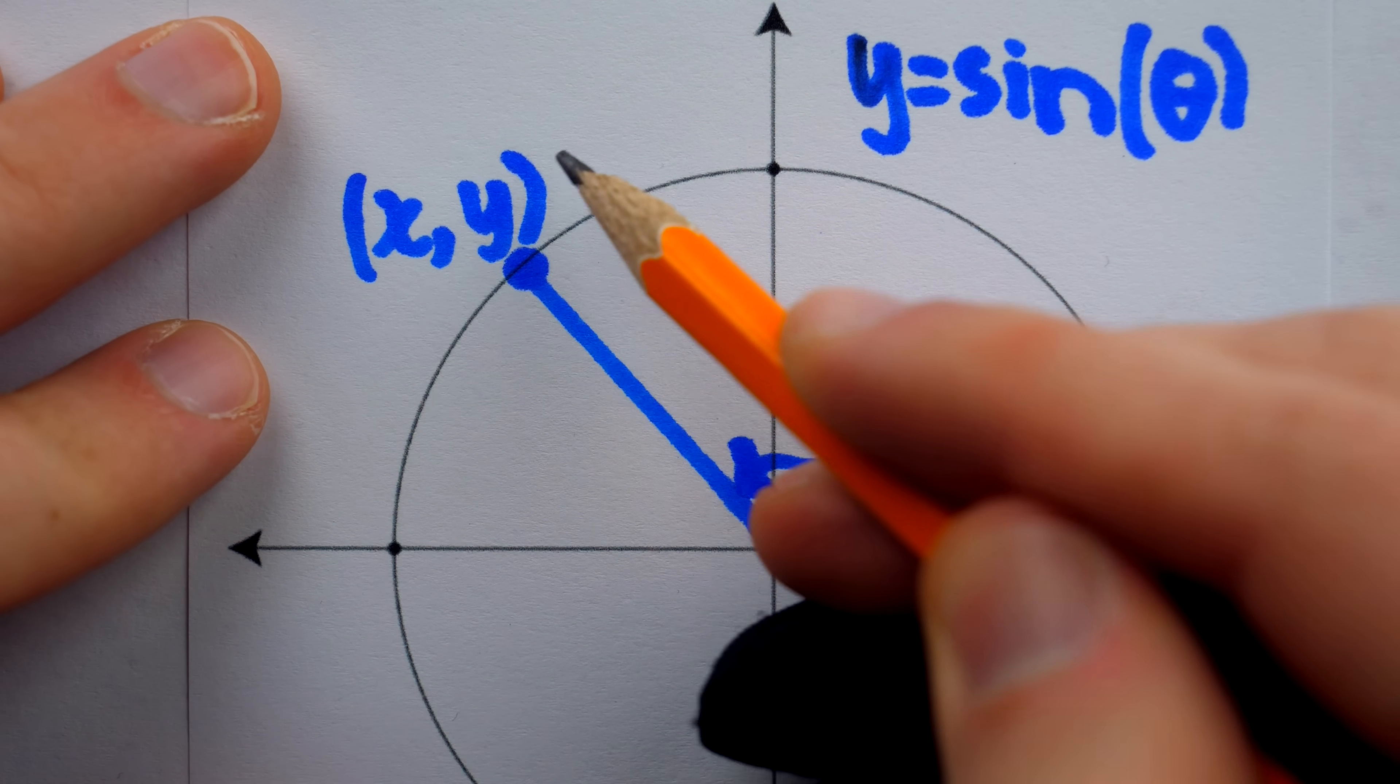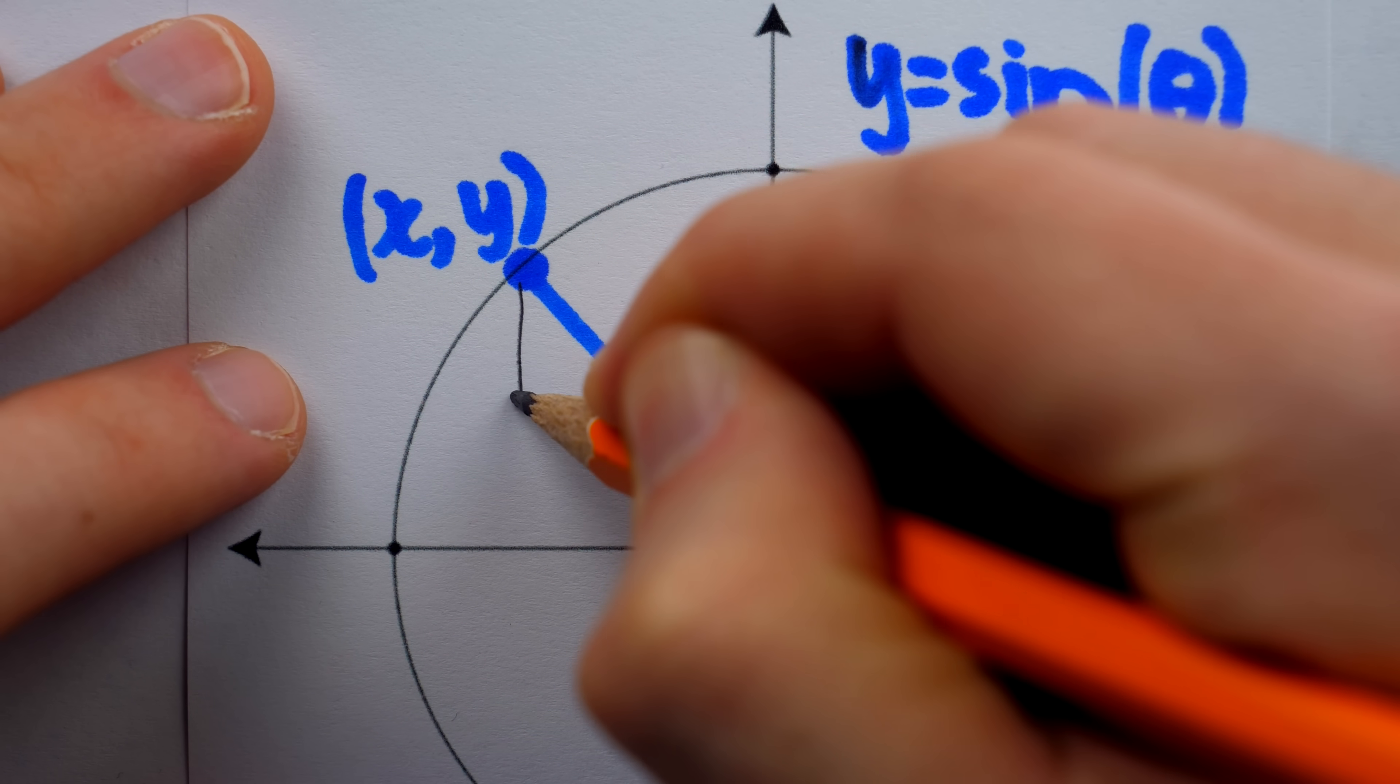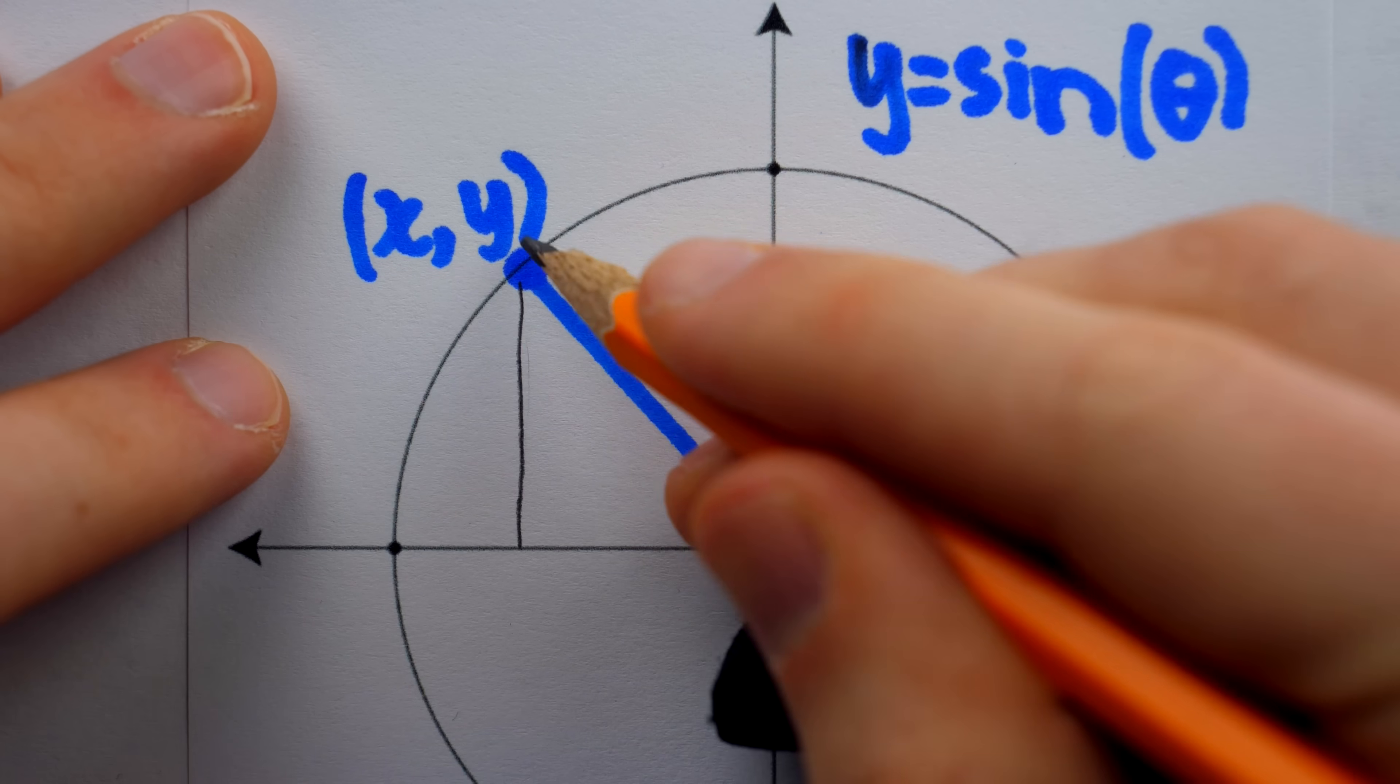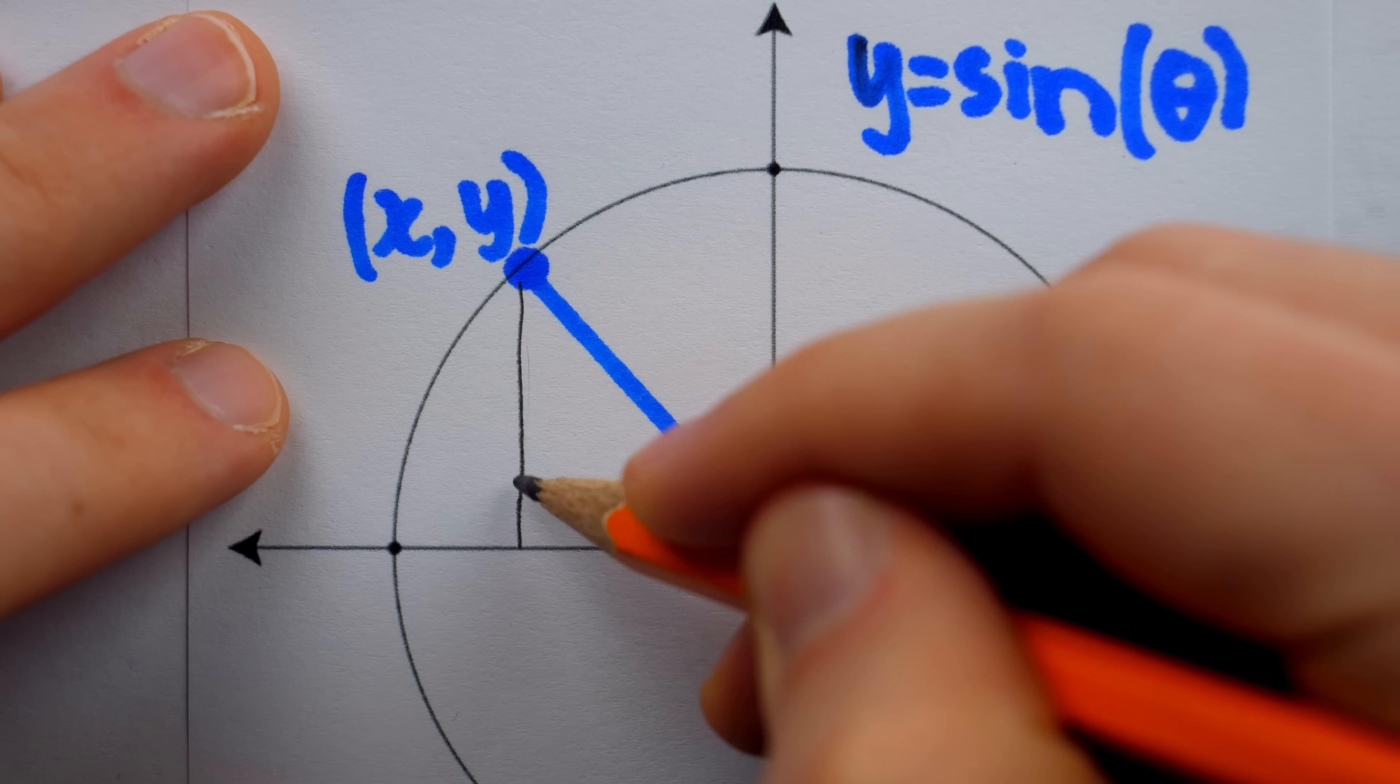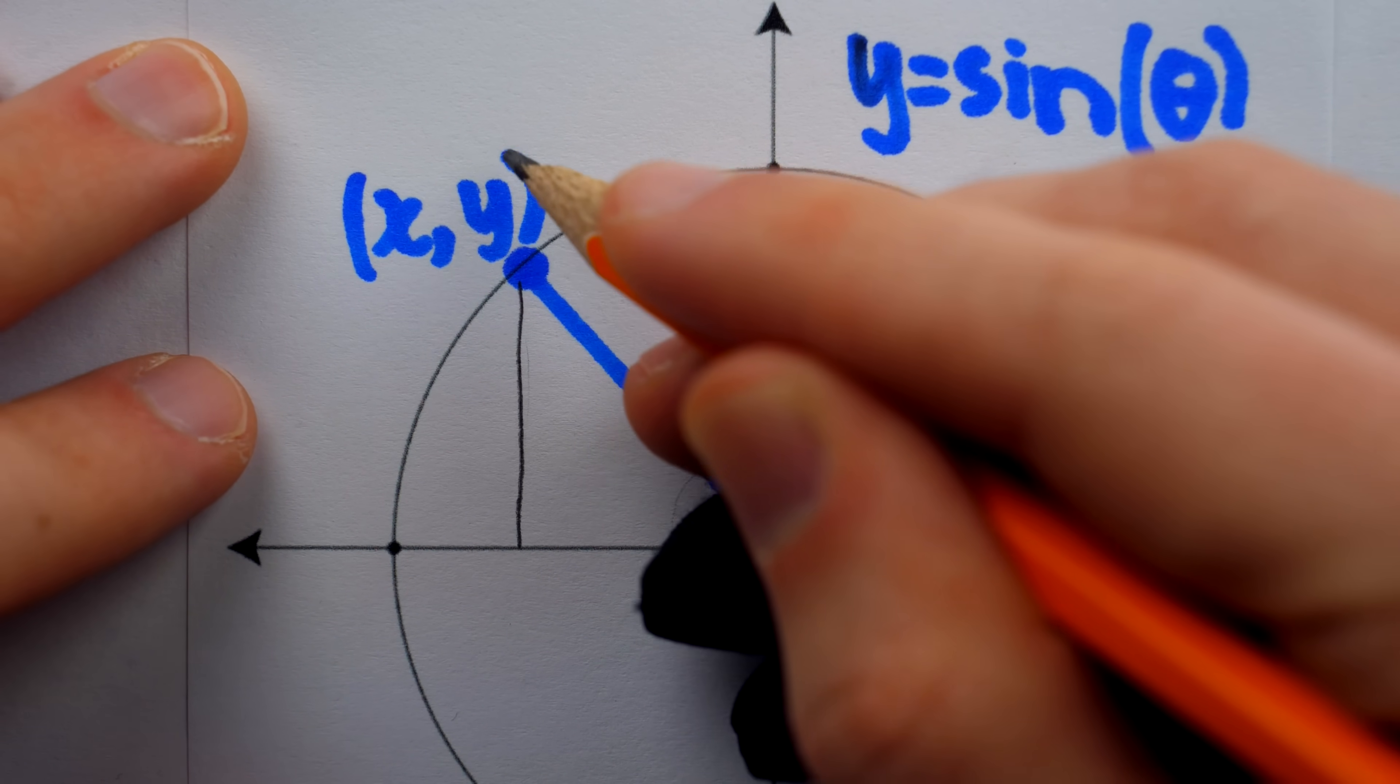At a glance, the y value of this point might not look much like opposite over hypotenuse, but when you draw this perpendicular, you can see that it really is. The hypotenuse is radius one in the unit circle, and this opposite segment is just the vertical distance from the x-axis, which is the y-coordinate.